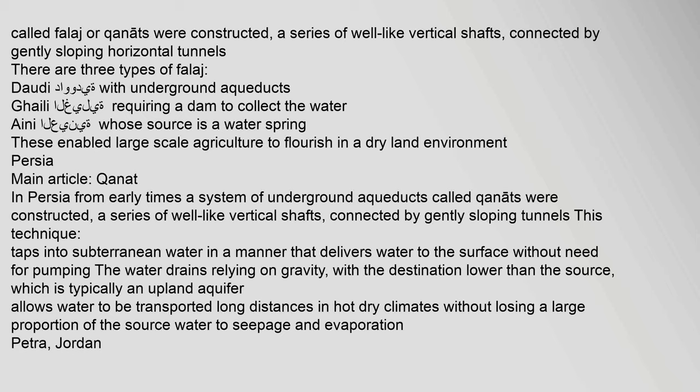In Oman, structures called falaj or qanats were constructed — a series of well-like vertical shafts connected by gently sloping horizontal tunnels. There are three types of falaj: those dotted with underground aqueducts, those requiring a dam to collect water, and those whose source is a water spring. These enabled large-scale agriculture to flourish in a dry-land environment.